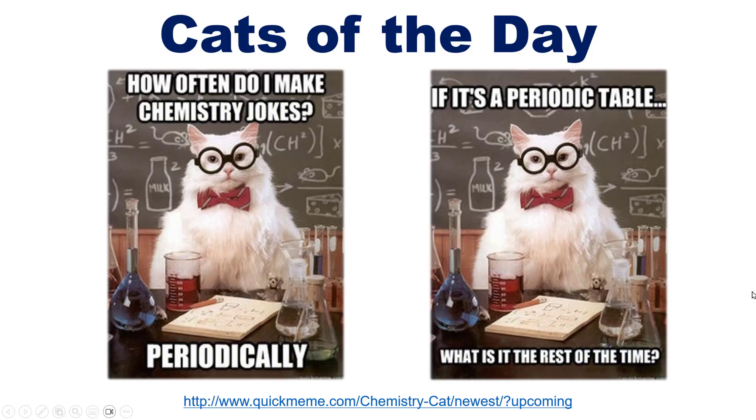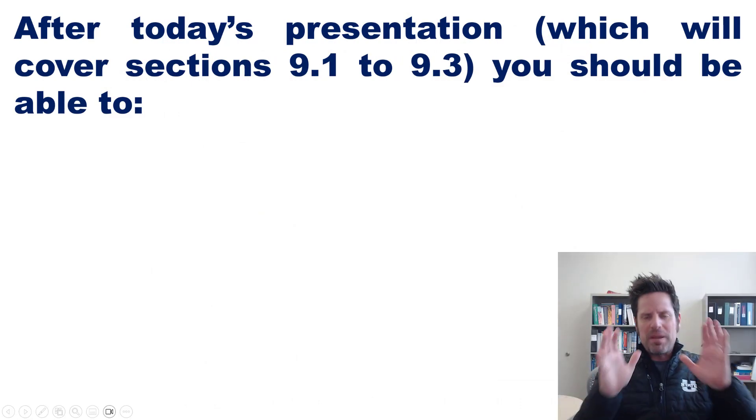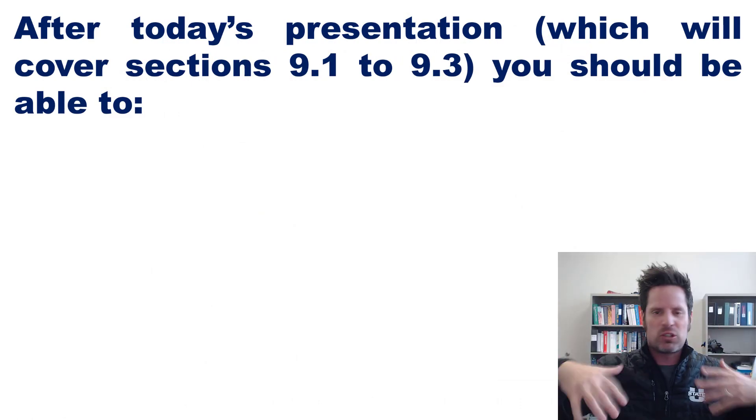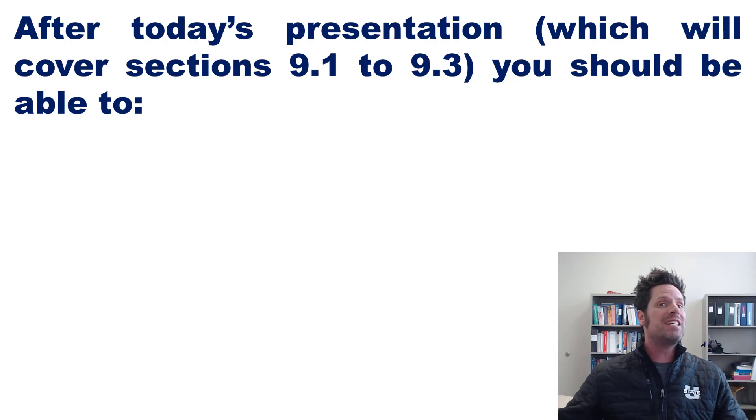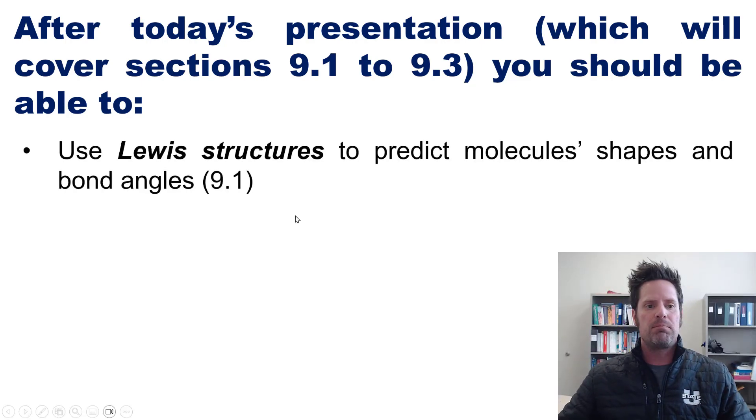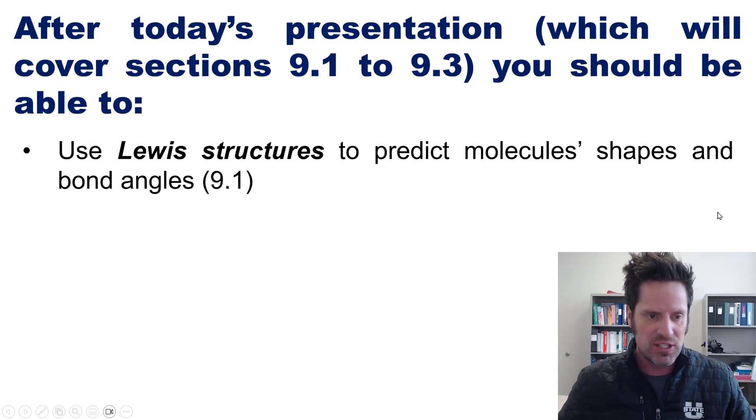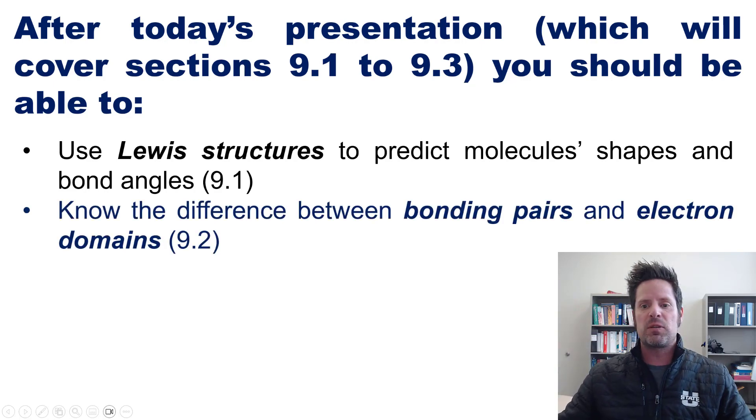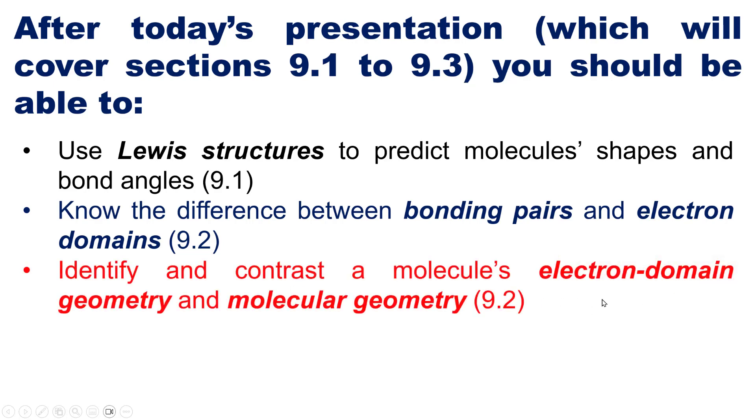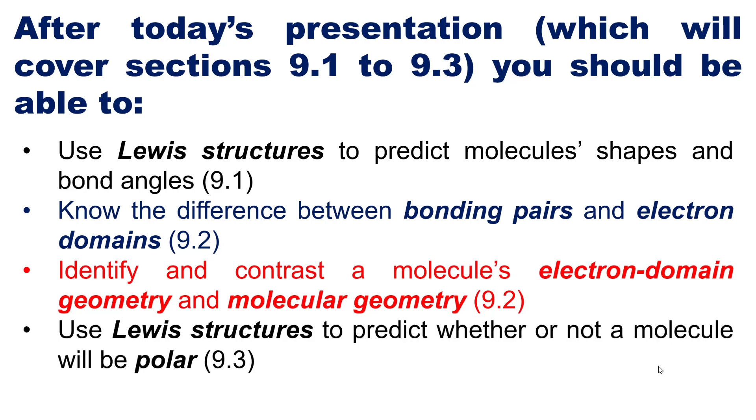After this presentation and others that will follow, and there will be cards and links to each subsequent presentation in the description below and on my channel, you should gain the following skills: First, being able to use Lewis structures to predict molecules shapes and bond angles. Second, knowing the difference between bonding pairs and electron domains. Third, identifying and contrasting a molecule's electron domain geometry from its molecular geometry. And fourth, using Lewis structures to predict whether or not a molecule will be polar.